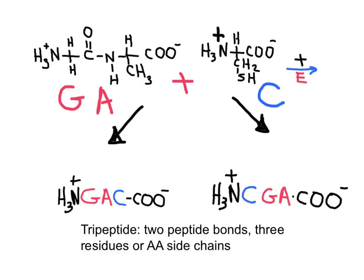If glycine-alanine reacts with the amino acid cysteine, two different combinations can produce two different tripeptides.